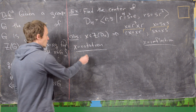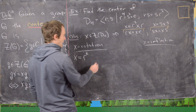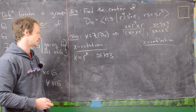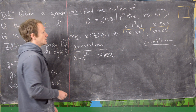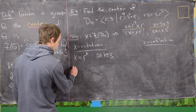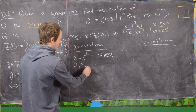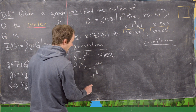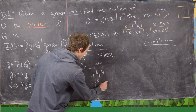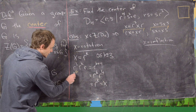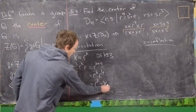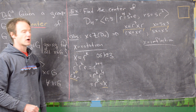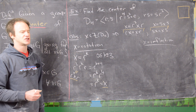If x is a rotation, then x equals R to the k where k is between 0 and 3. Now let's compute R cubed XR: that's R cubed times R to the k times R, which is R to the k plus 4 by exponent rules. That equals R to the k times R to the 4, but R to the 4 is the identity, so we get R to the k, which is just x. So R cubed XR equals x, meaning any rotation commutes with the generator R. This makes sense — an arbitrary rotation commutes with the rotational generator R.